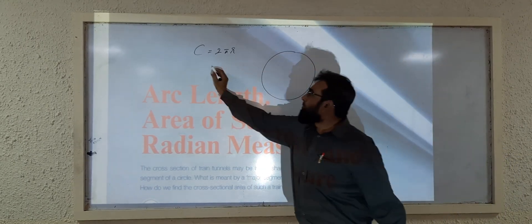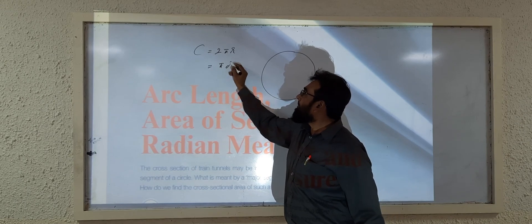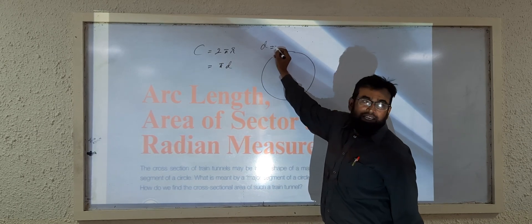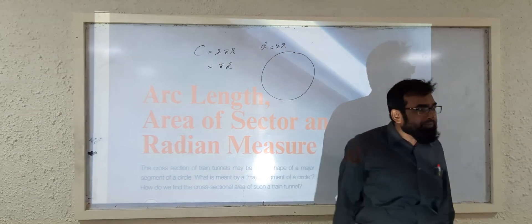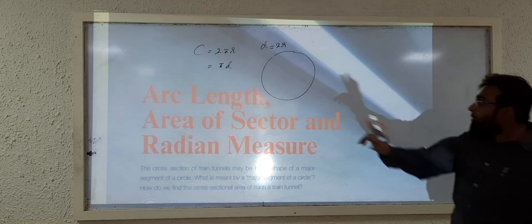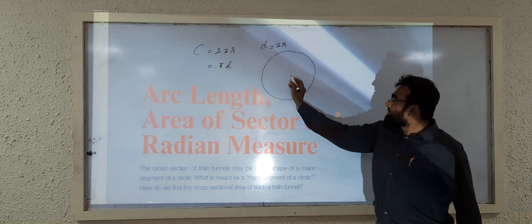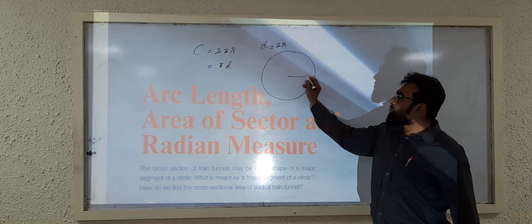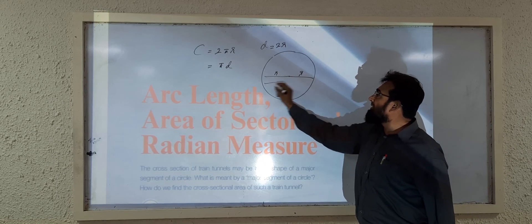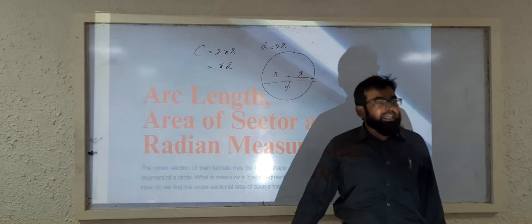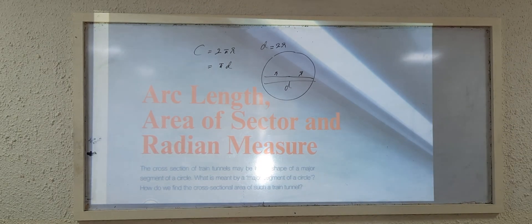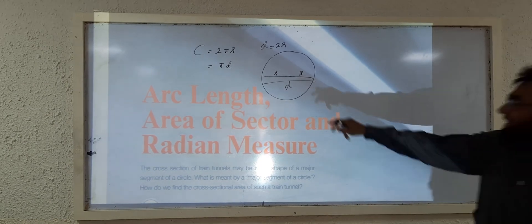This formula can also be written as πd, because the diameter of the circle is two times the radius. The center-to-edge distance is the radius, and double the radius is called the diameter of the circle.